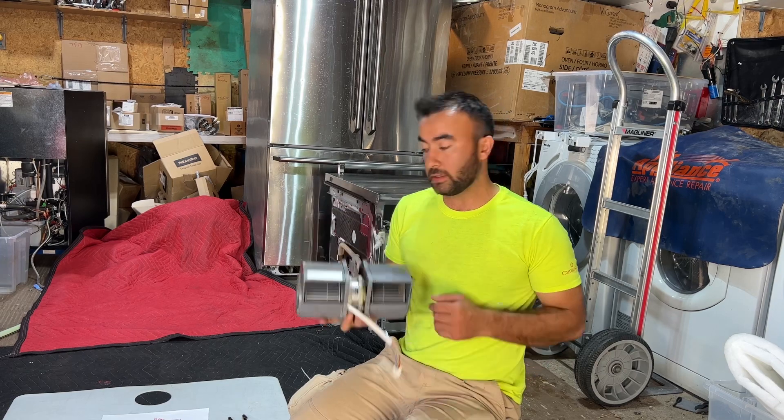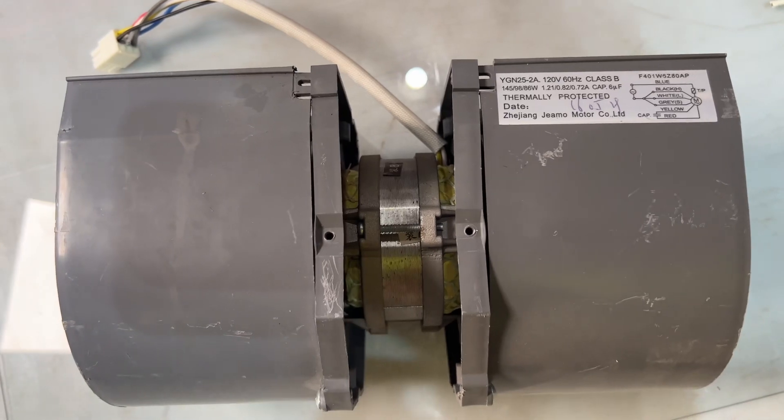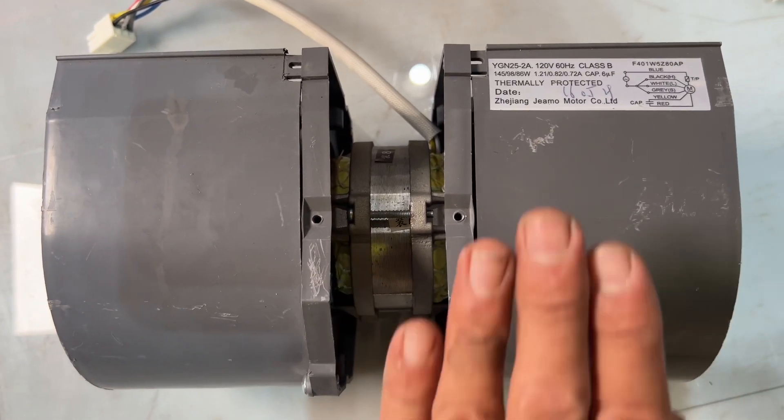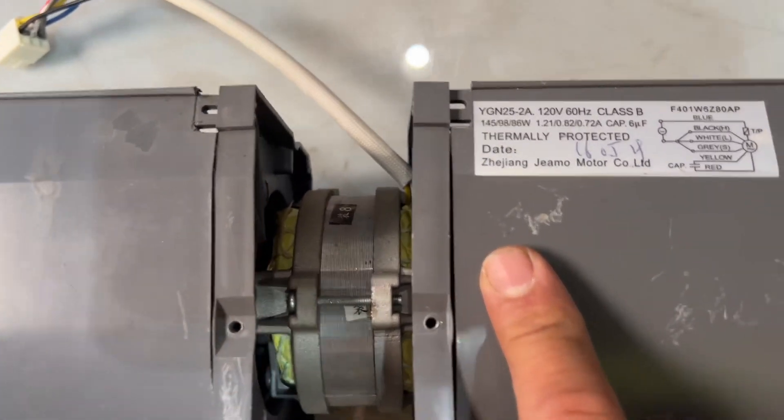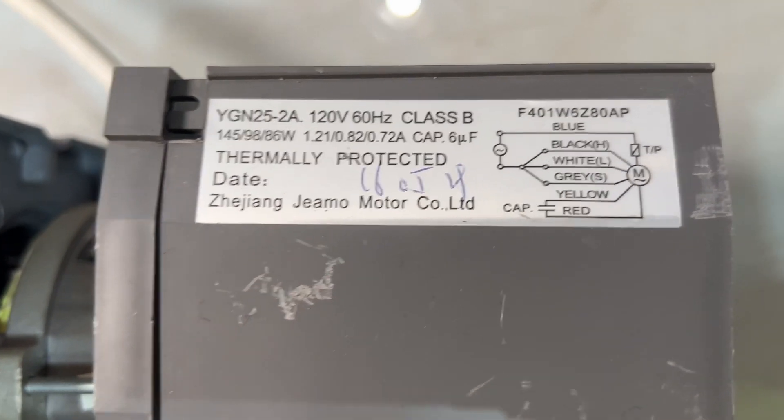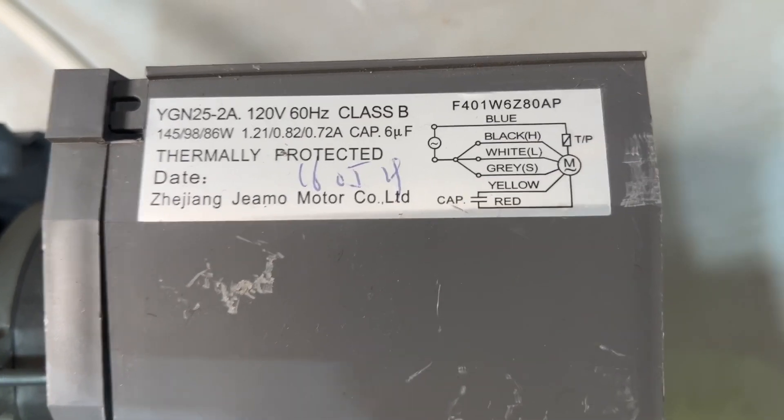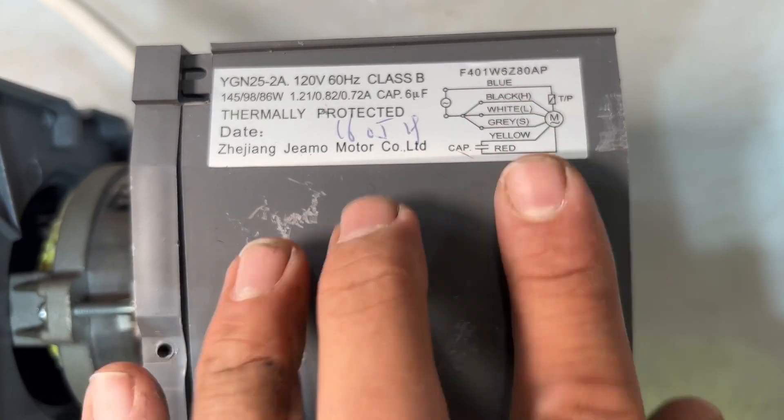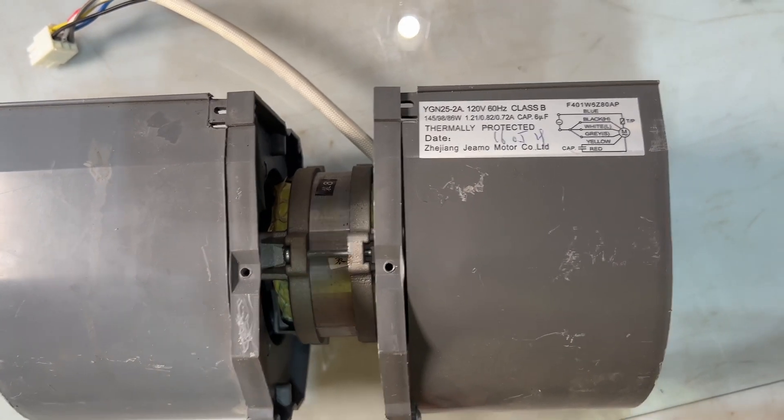Anytime you pull this motor out, it comes with this wire diagram here on the side for the motor. If you don't have this wiring diagram, you can always pull out the wiring diagram from the microwave itself and follow it from there.